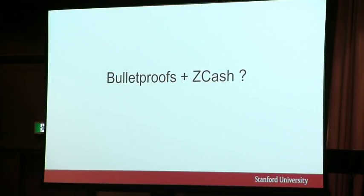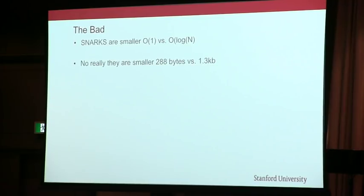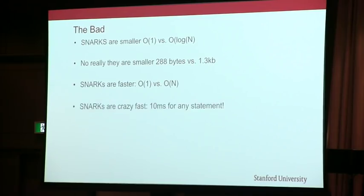The question you're probably most interested in is: would Bulletproofs work with Zcash? Let's think about why we would not want to do this. The main reason is that SNARKs are really, really cool — they're super small. Asymptotically they're constant size versus logarithmic for Bulletproofs, and practically they're almost a factor of 10 smaller. They're also really fast — the gap is even bigger there. SNARKs are crazy fast: you can verify any statement in 10 milliseconds.